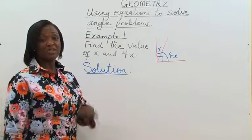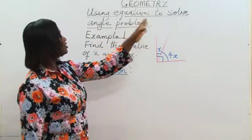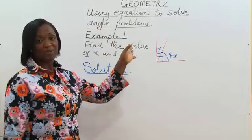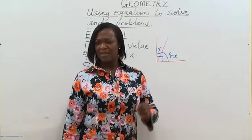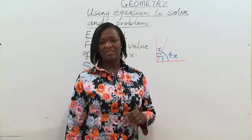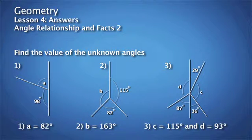Today, we are continuing our lesson on geometry. We will be using equations to solve angle problems. But before we do that, I would like us to check the work we did last time. Did you do the work? Here are the answers. Number one, the value of angle A is 82 degrees. Number two, the value of angle B is 163 degrees. Number three, the value of angle C is 115 degrees and the value of angle D is 93 degrees.